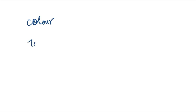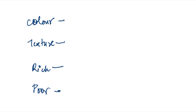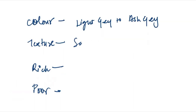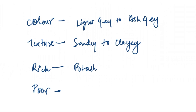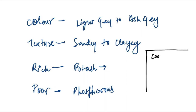There are four things to know about alluvial soil: colour, texture, minerals it is rich in, and minerals it is deficient in. The colour is light grey to ash grey. The texture is sandy to clay. It is rich in potassium (potash) and poor in phosphorus. Now, which crops can be grown in alluvial soil? Mention your answer in the comment section below.